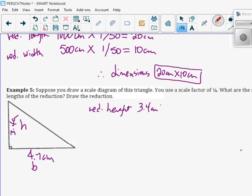My reduction height is going to be 3.4 centimeters. Remember the triangle. If I'm finding the reduction, it's a times. So we're going to times it by one quarter. So I get 0.85 centimeters. And my base is 4.7 centimeters times one quarter. And I get 1.175 centimeters.